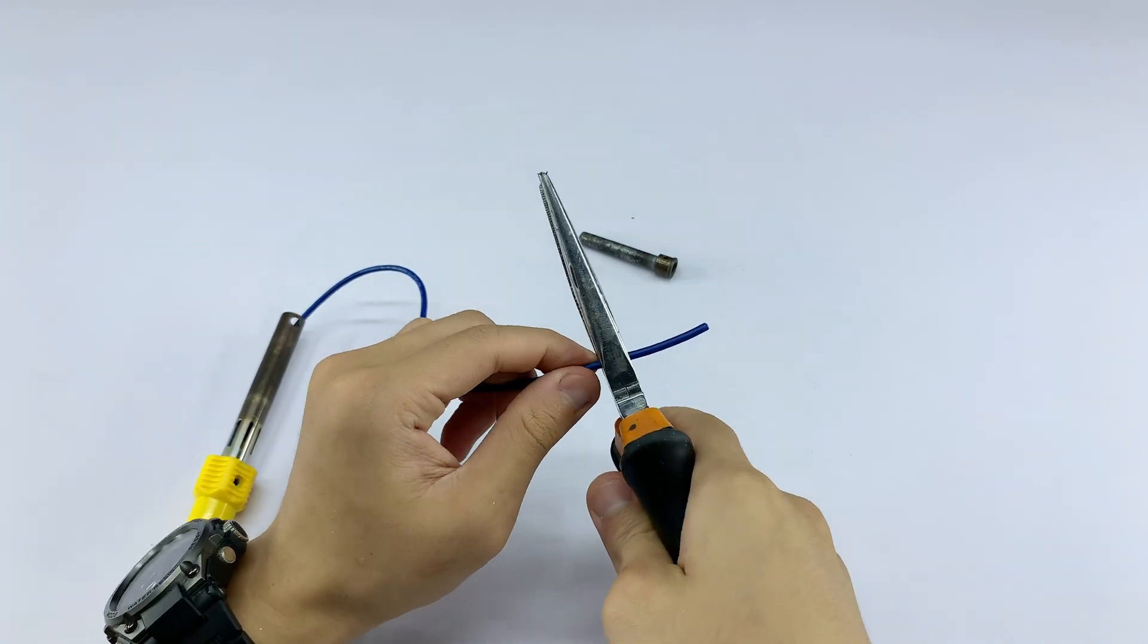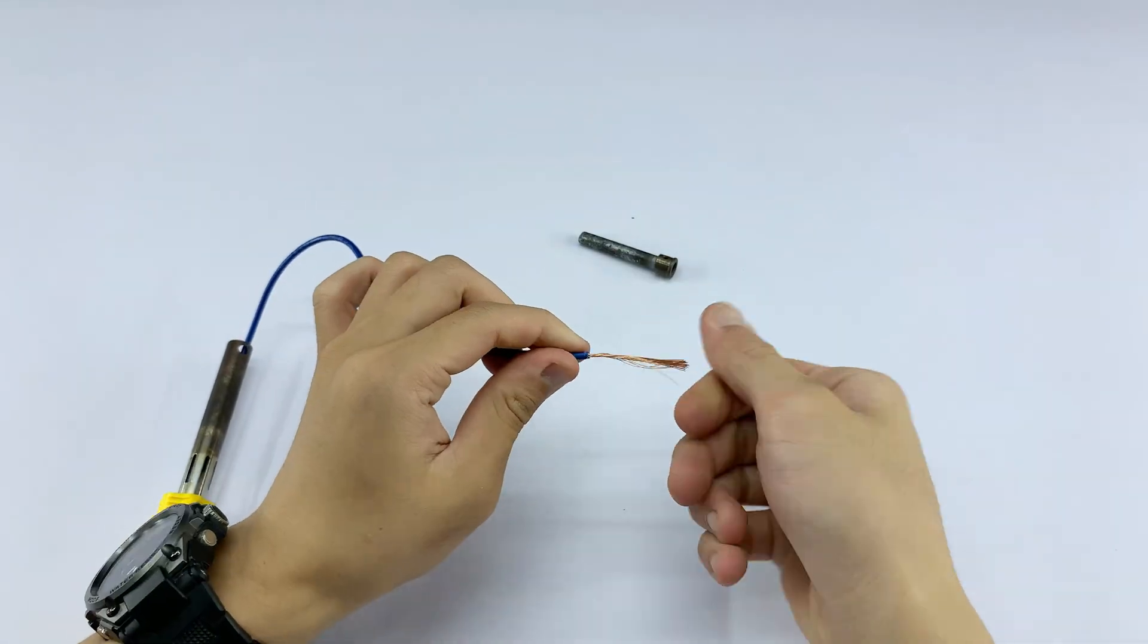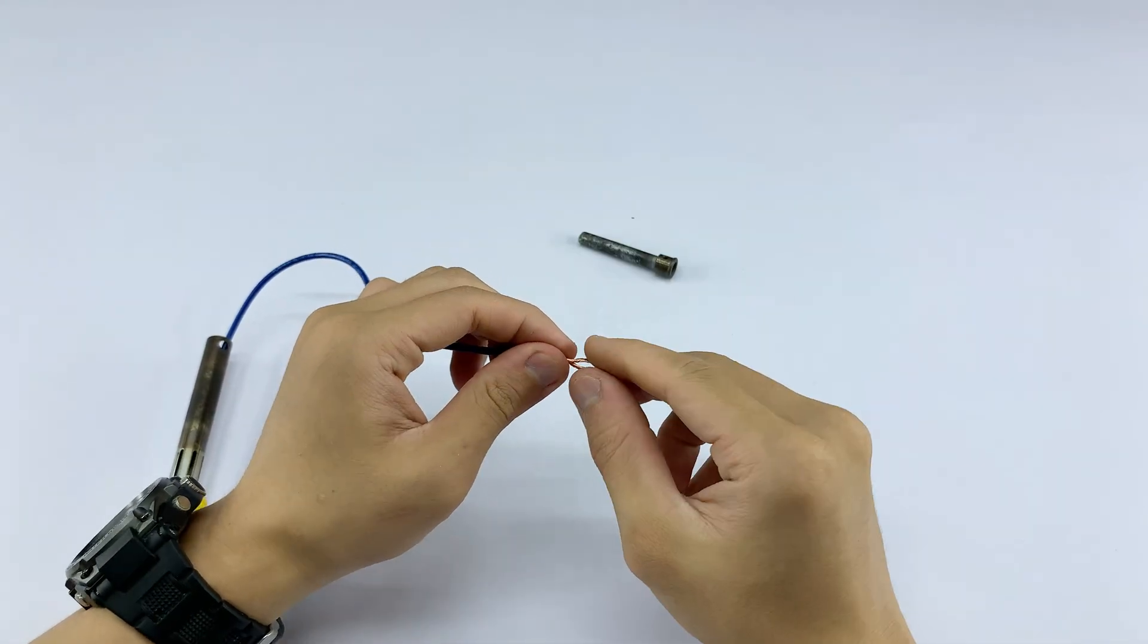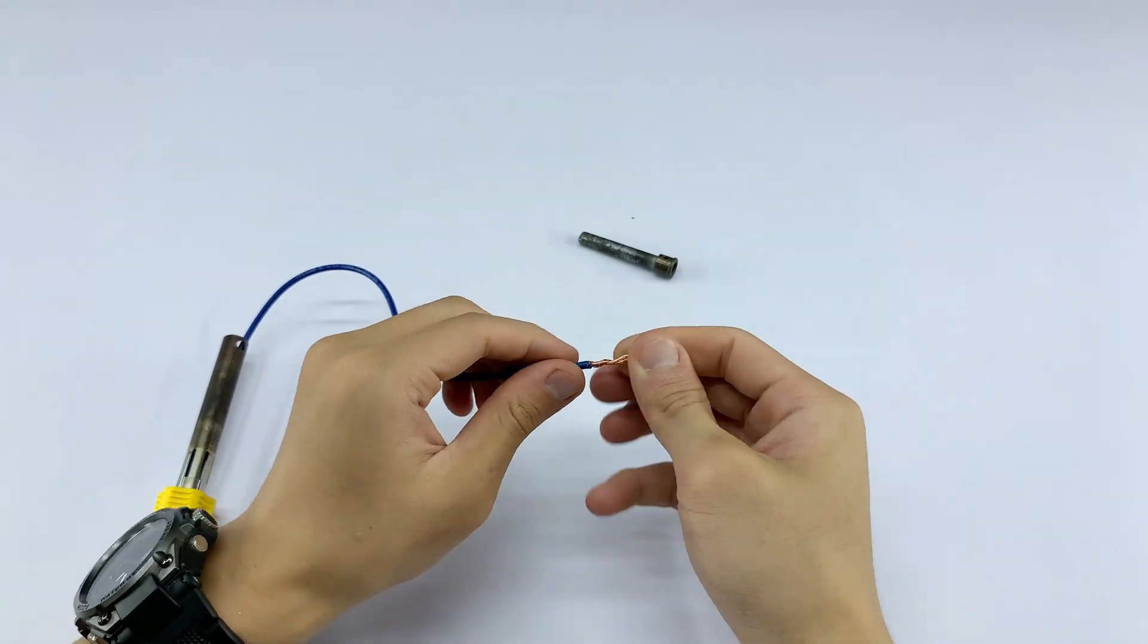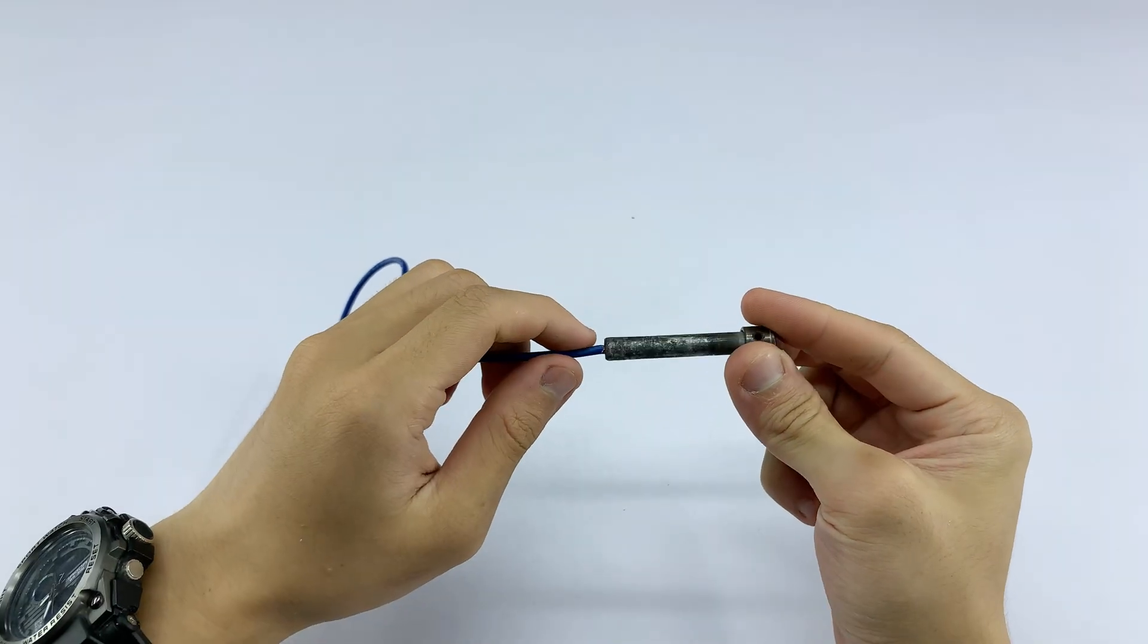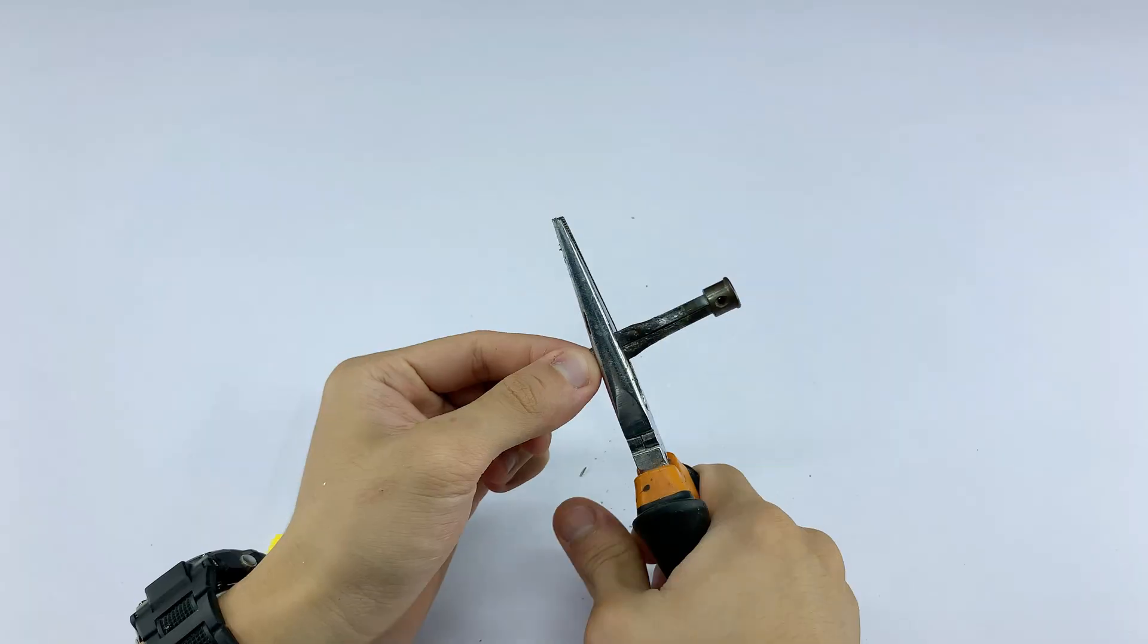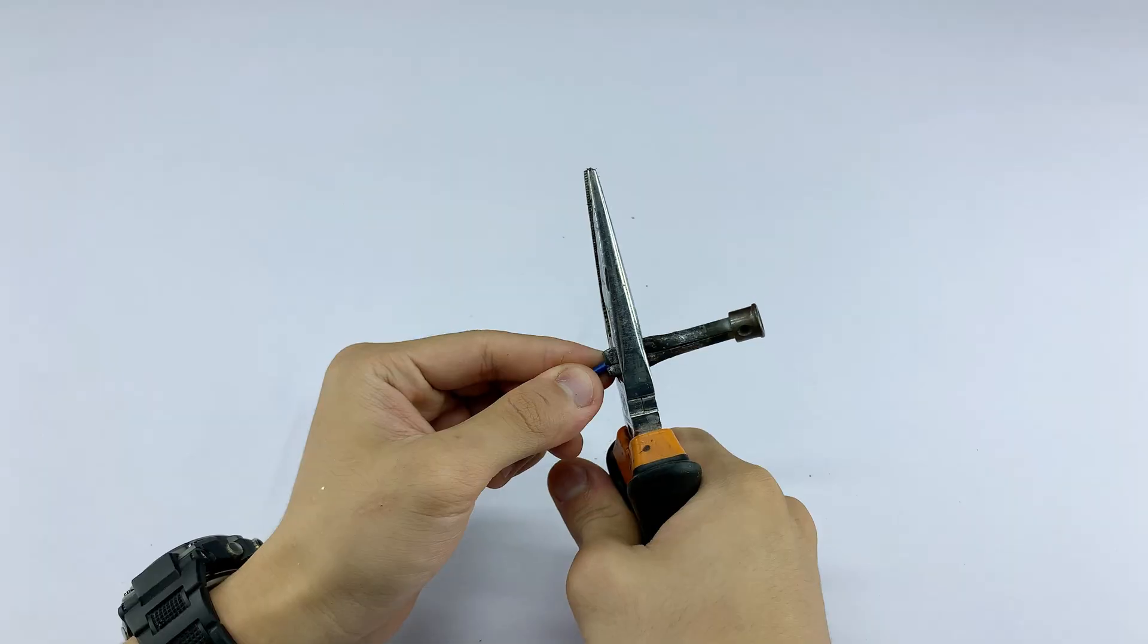I'm stripping one end of the blue wire to expose the individual strands and then I'm twisting them together for a better connection. I'm inserting the twisted end of the blue wire into one end of the small black component that was part of the original heating element. I'm using pliers to firmly crimp the wire into the component, ensuring a secure connection.